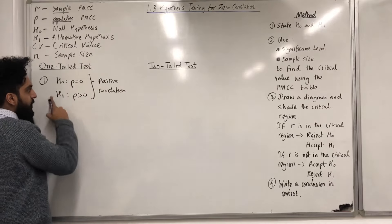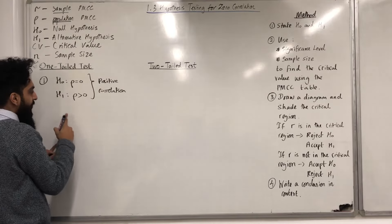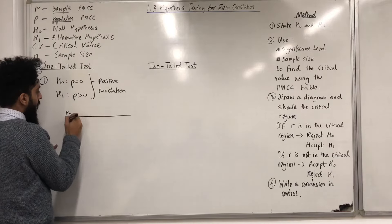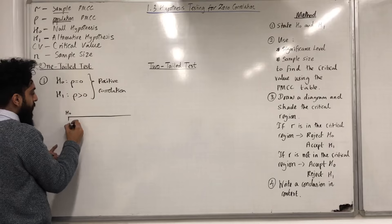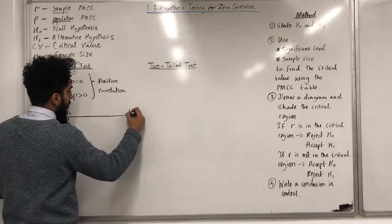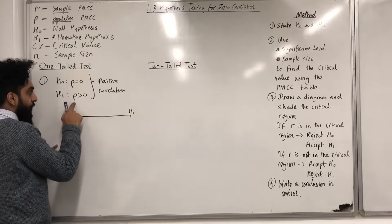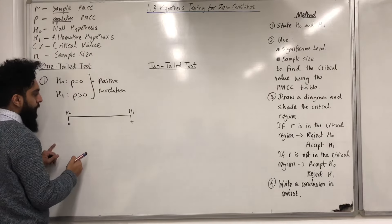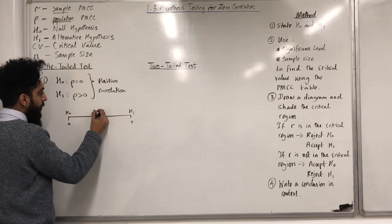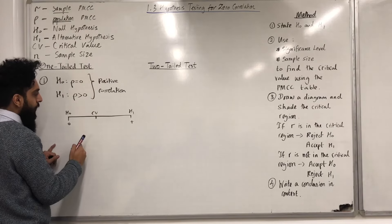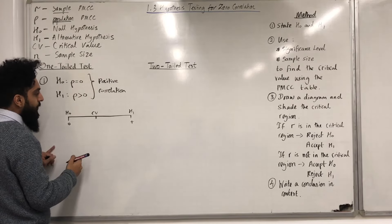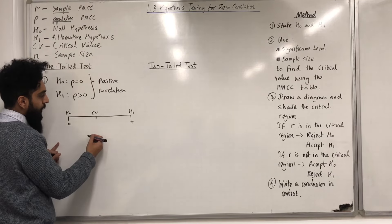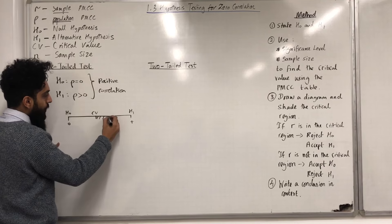We can model this situation using a diagram. H0 represents rho equal to zero, so I can put zero here. H1 represents rho greater than zero — in other words, a positive value — so I can put plus over here. The CV sits in the middle. CV is a shorthand for critical value. Anything that is the CV or more represents the critical region, so we can shade in the critical region.